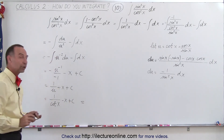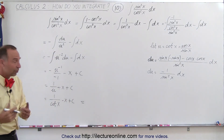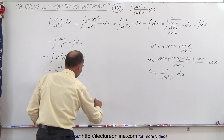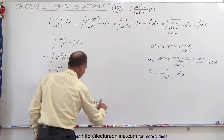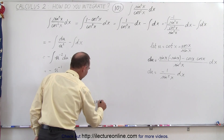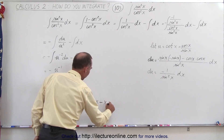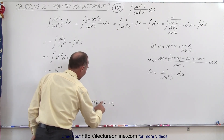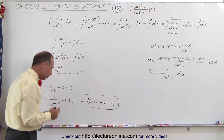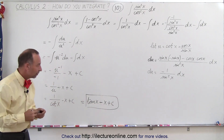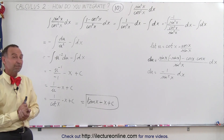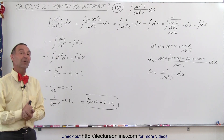Finally, 1 over the cotangent is of course the tangent of x. So this becomes the tangent of x minus x plus a constant of integration. And so this is the final result of the integral of sine square of x divided by cosine square of x. And that's how we do it.